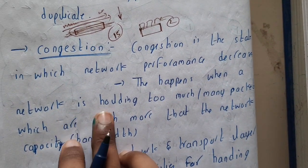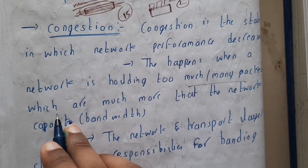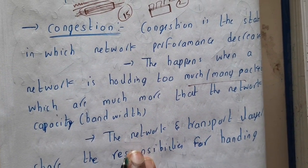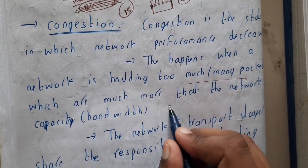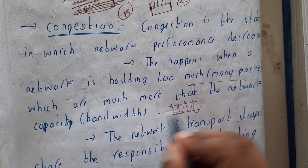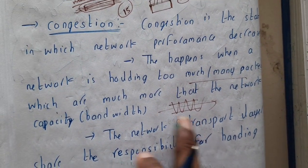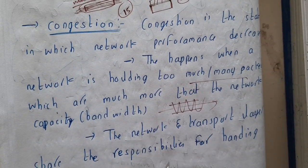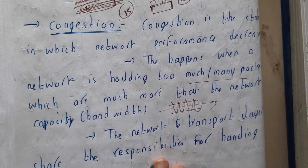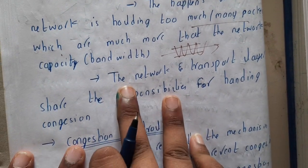This happens when the network is holding too many packets, much more than the network's capacity or bandwidth. Similarly, a road designed for normal traffic gets blocked under heavy traffic. In the same way, if there are too many packets on a single path, there will be huge congestion there.